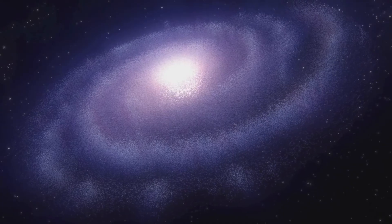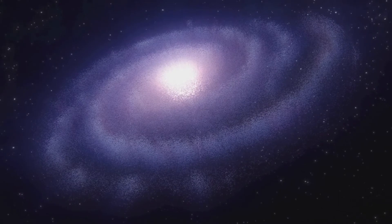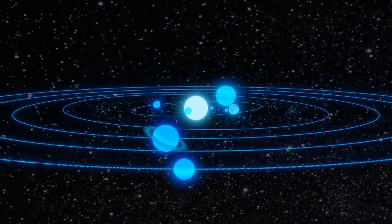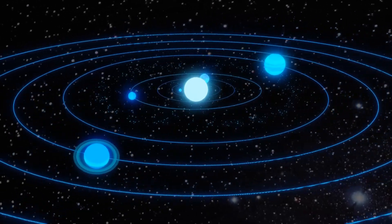The Earth is located in the galaxy called the Milky Way and is part of the solar system. The solar system is made up of a star we call the Sun and eight planets orbiting it, including the Earth.